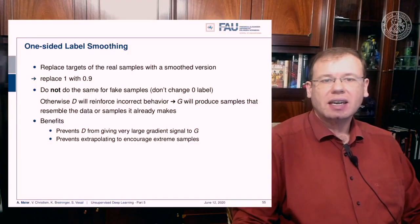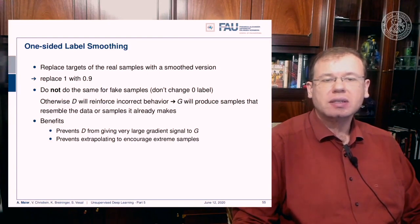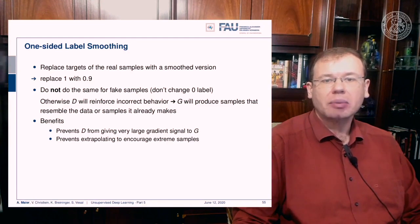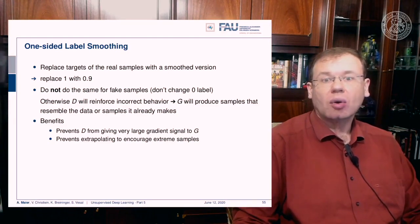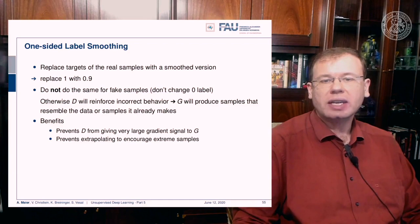One trick that can help quite a bit is one-sided label smoothing. You replace your targets of the real samples with a smooth version — so instead of using a probability of 1, you use 0.9 — but you do not do the same for fake samples. Changing the fake label would reinforce incorrect behavior, causing the generator to produce samples resembling what it already makes. Benefits include preventing the discriminator from giving very large gradients to your generator, and also preventing extrapolation to encourage extreme samples.